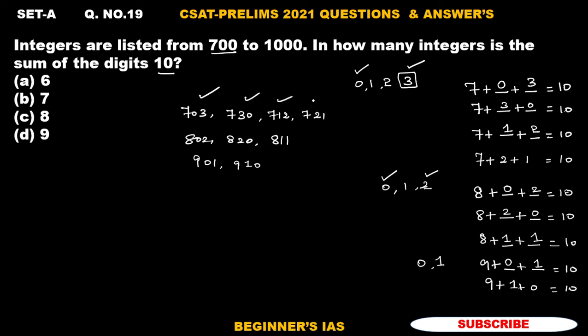Now count how many: 1, 2, 3, 4, 5, 6, 7, 8, 9. The answer for this question is there are nine integers in which the sum of the digits is 10. With this I'm concluding this session. Thank you all, have a good day.